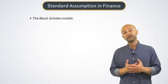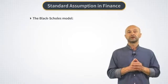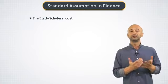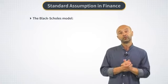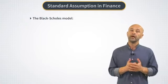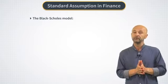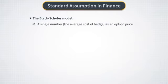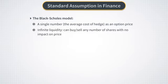This is also the market assumed in classical financial models such as the Black-Scholes option pricing model, which we discussed in our course on reinforcement learning and also in the first two weeks of this course. This model provides a single number as a price of an option, and this unique option price is given by the expected cost of hedging of this option. This model also assumes infinite liquidity, meaning you can buy any number of shares and it will not have any impact on the price.